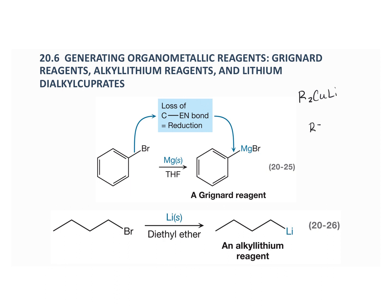Grignard reagents and alkyl lithium reagents are very strong R⁻ bases as well, which is why these alkyl lithium reagents are commonly used to deprotonate very weakly acidic carbon-hydrogen protons in the formation of a Wittig reagent, which we saw in Chapter 18 as well.